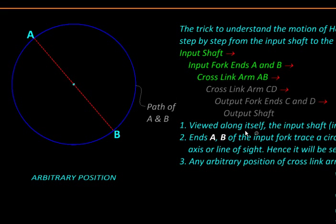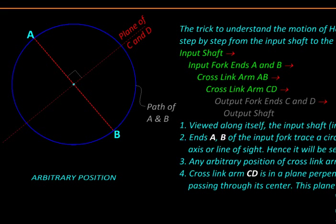So that is a position of the cross link's arm AB. The cross link's arm CD will be in a perpendicular plane, seen here as a line. The position of C and D will also be somewhere on this ellipse traced by the output fork.